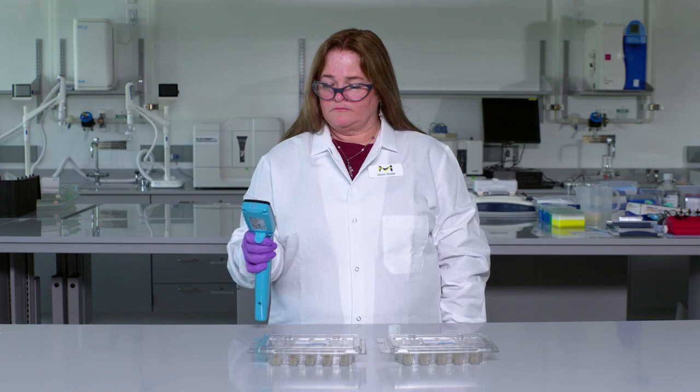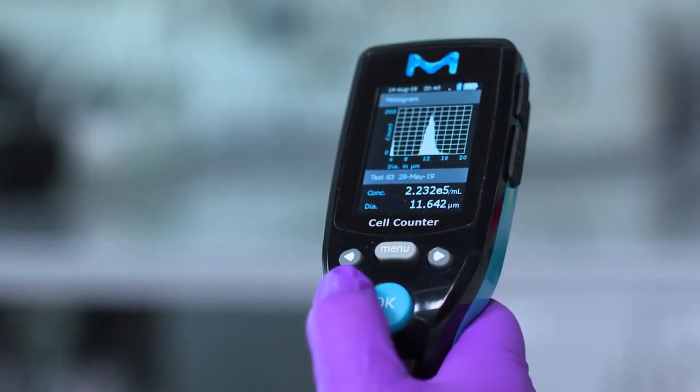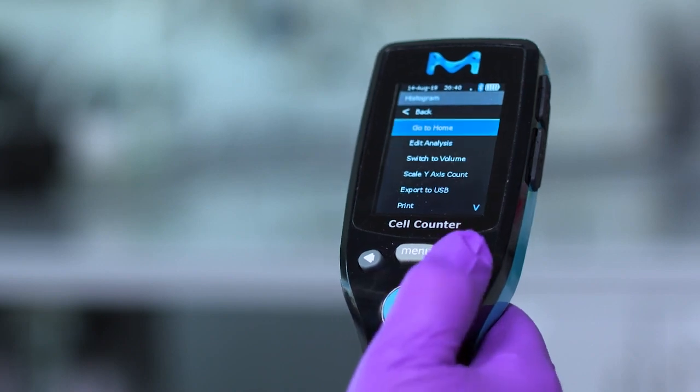There are two ways to gate. First, directly after histogram is generated, press the OK button and go to edit analysis.